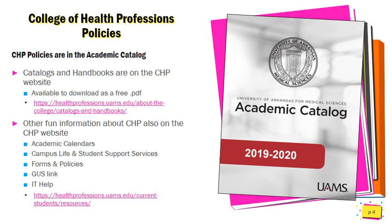On the CHP website is other good information that you will want to know where to locate, such as academic calendars — which tells you when all the holidays are, when we don't have class, when the end of the semester is, and all that good stuff. It has information about campus life and student support services, forms and policies, a link to GUS, and information about getting help with IT issues. If you need help with IT, you can start there and they have contact information, and there's a link posted there for you to use.